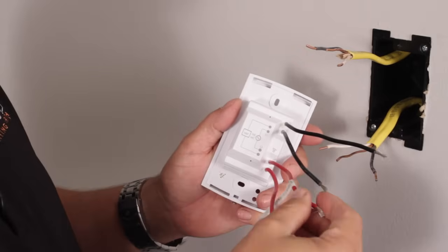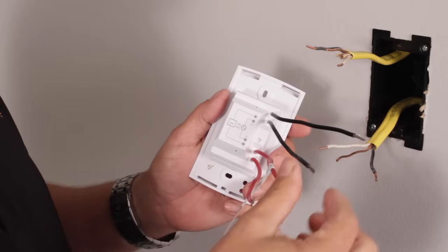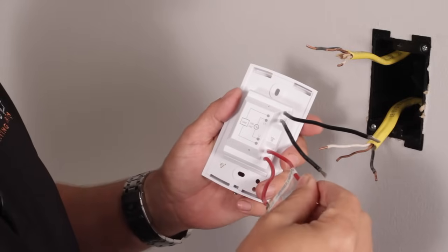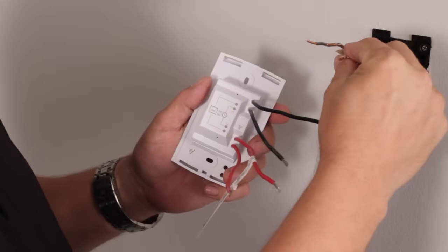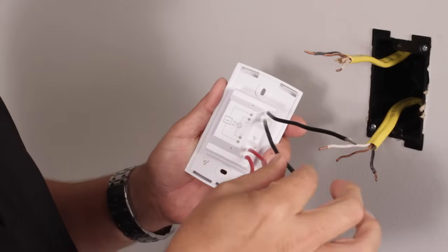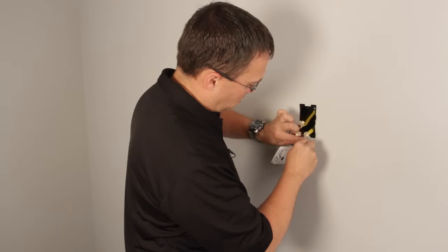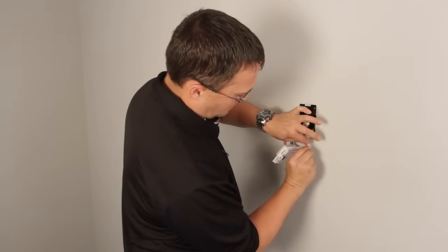Here we have black wires and red wires. The black L1 wire and the red L2 wire are going to connect to the wires coming from the breaker panel. Now the black load wire and the red load wire are going to be connected to the wires going to the heater.